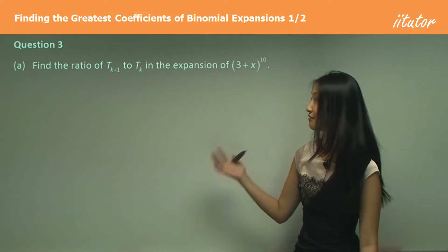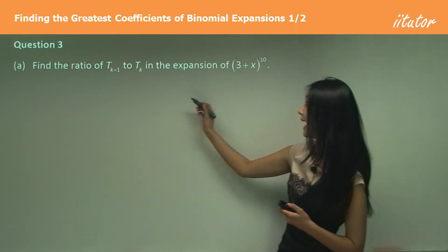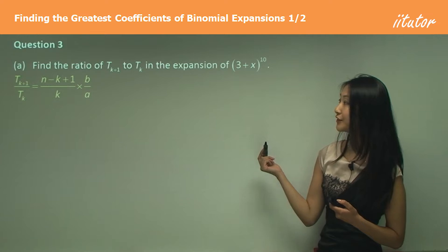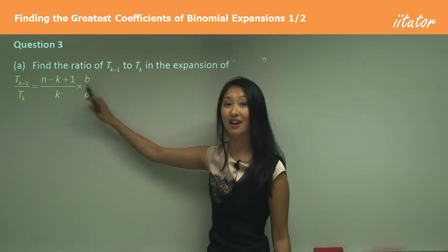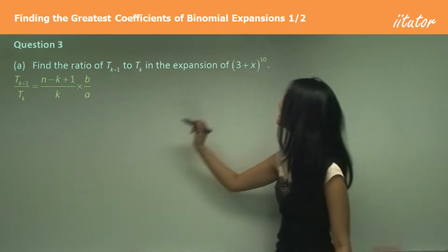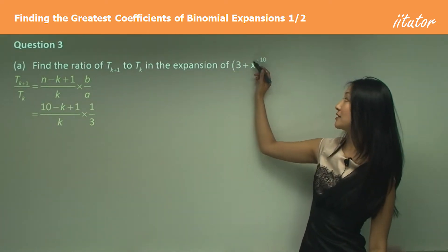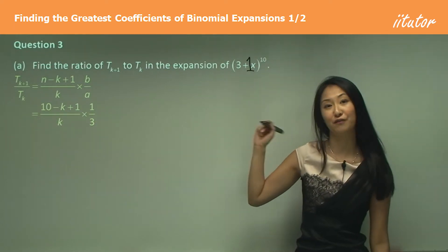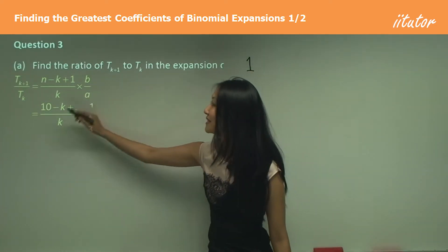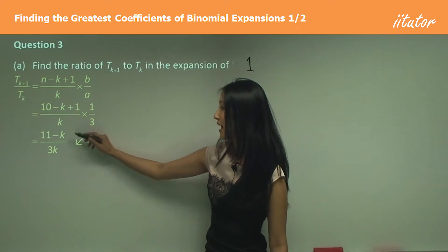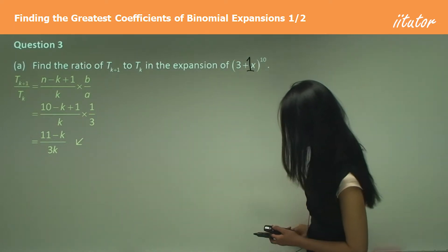Let's look at question three. We need to find the ratio of t(k+1) to tk in the expansion. Using the formula n minus k plus 1 on k times b on a: n is the index, so that's 10. b is 1 because we're only dealing with coefficients, and a is 3. Simplifying: 10 plus 1 is 11, and 3 times k is 3k, giving us (11 minus k) on 3k as our ratio.